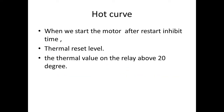Now we see the hot curve. When we start the motor after restart, inhibit, or thermal reset — when you reset the thermal manually or after the thermal resets by itself — if you see in the relay, the thermal value will be having some 40 to 60 degrees. This is because of the initial value we keep in the relay. Due to that value we will have some minimum temperature. To reduce the temperature it will take some more time for cooling, but mostly in operation we will not wait that long. So we start the motor, and at that particular time the relay will be considered as a hot curve.